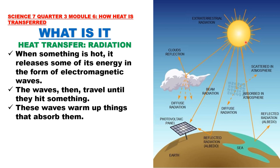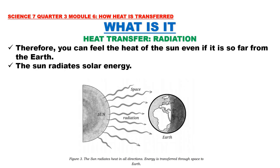When something is hot, it releases some of its energy in the form of electromagnetic waves. The waves then travel until they hit something, and warm up things that absorb them. Our sun releases solar radiation in the form of electromagnetic waves, which warm up our planet. You can feel the heat of the sun even if it is so far from the Earth. The sun radiates solar energy in all directions, and energy is transferred through space to Earth.